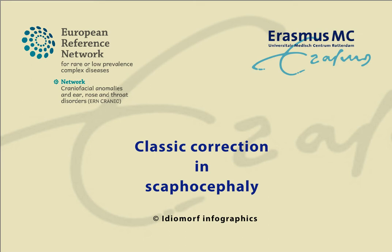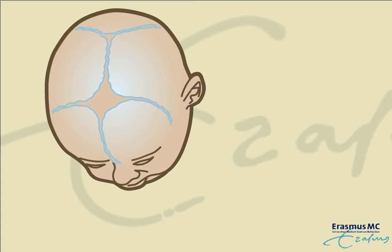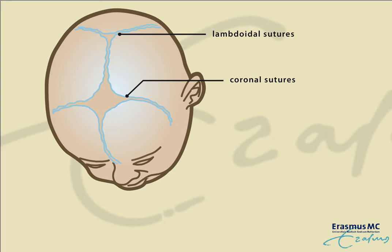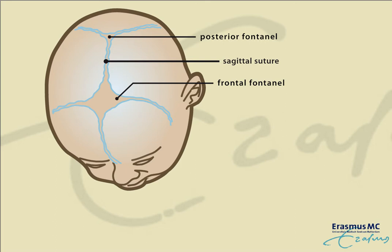Classic correction in scaphocephaly. At birth, the skull is composed of separate skull bones that are connected with skull sutures. The sutures are the growing sites of the skull. One of these sutures is the sagittal suture, running in between the frontal and posterior fontanelle.